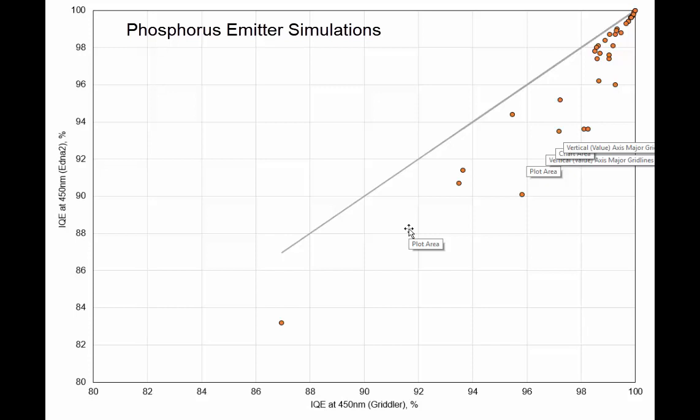So generally it does seem that Aetna 2, for the case of phosphorus emitters, calculate IQE at 450 and 400 nanometers that are lower than the results obtained by PC1D. However, both of course trend the same way. So one can expect some slight differences in the short circuit current density, which is calculated based on the IQEs of Aetna 2 or in the Gridler PC1D interface.